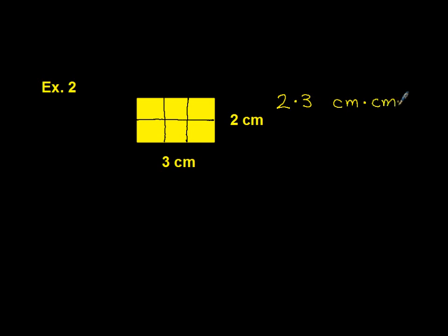We're also multiplying centimeters times centimeters. Well, 2 times 3 is easy. That's 6. And then centimeters times centimeters equals centimeters squared.